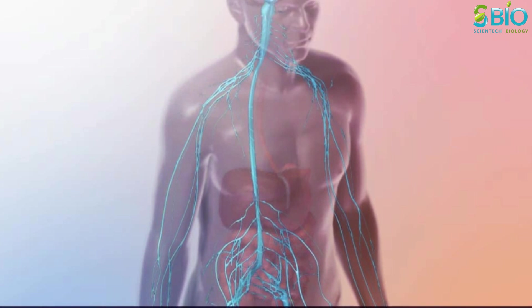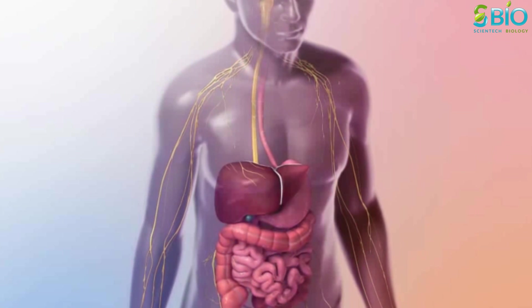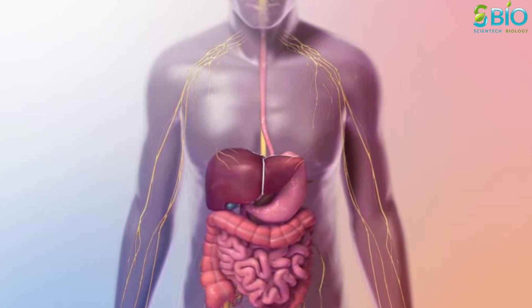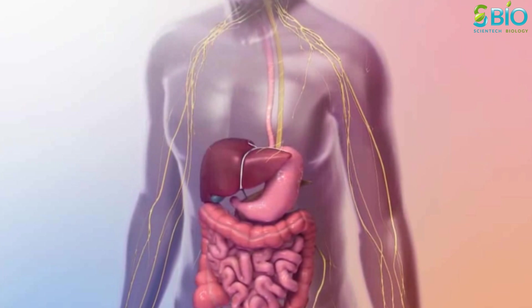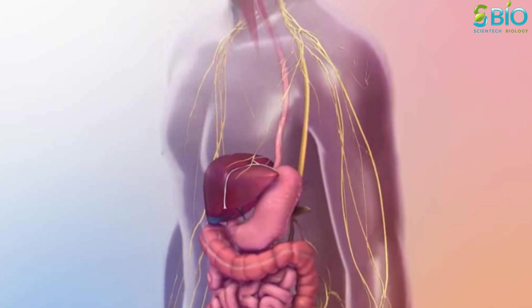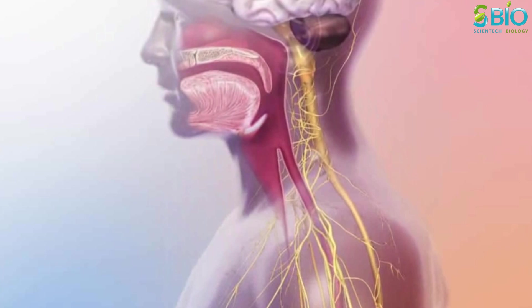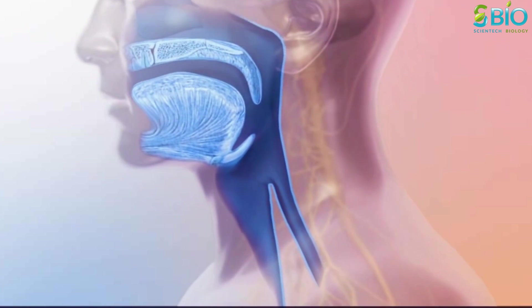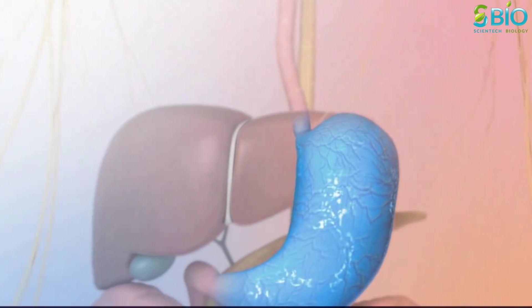The autonomic nervous system controls contraction of the alimentary canal, moving solid food down the esophagus, churning it in the stomach, and moving chyme through the small intestine and large intestine. The alimentary canal is a single continuous tube that includes the oral cavity, esophagus, stomach, and intestines.